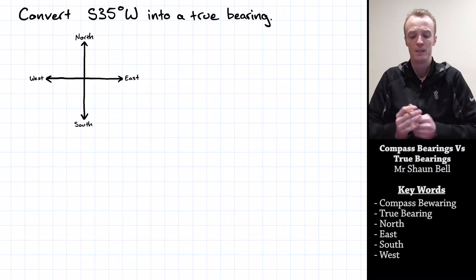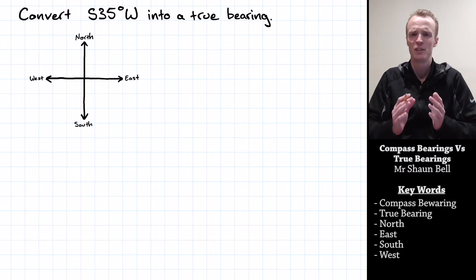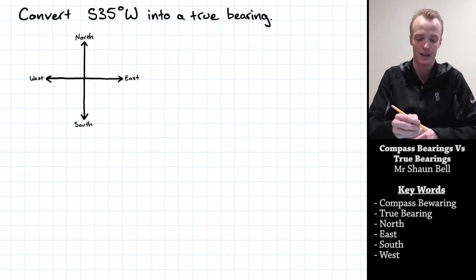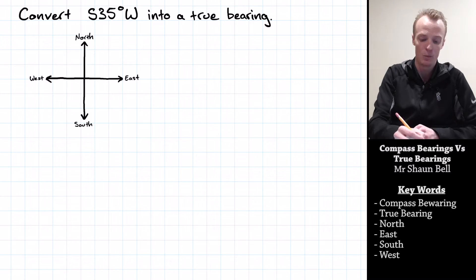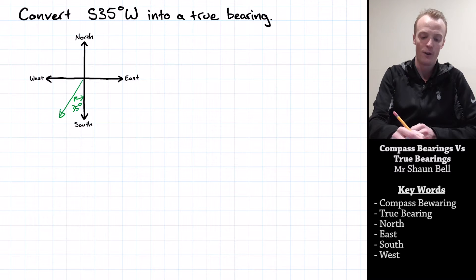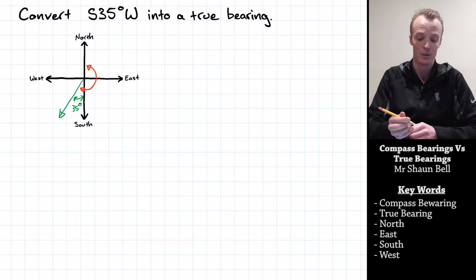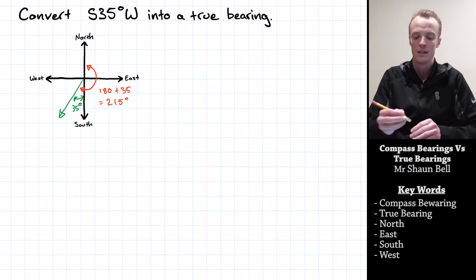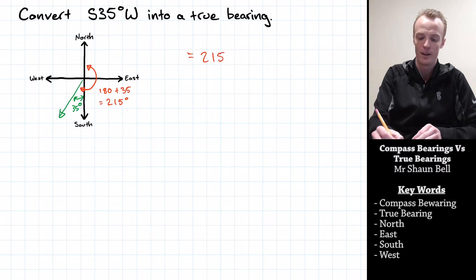Now let's look at how we convert a compass bearing into a true bearing. We've been given compass bearing S35W. The best approach is to draw a compass and plot that bearing. It starts at South, then 35 degrees towards the West. True bearing always starts at North, and we want to find how many degrees clockwise it is from North to our bearing. We know North to South is 180 degrees, and in this case we're adding an extra 35 degrees, so the true bearing is 215 degrees true.